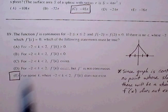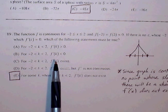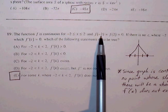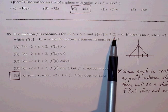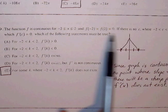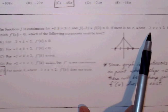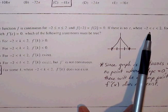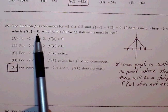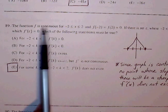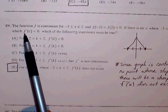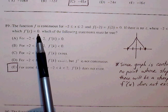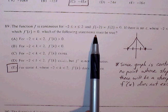Okay, 89. The function f is continuous between negative 2 and 2, and we have ordered pairs given to us. f of negative 2 is 0, f of 2 is equal to 0. If there is no C where C between negative 2 and 2 for which f'(C) is equal to 0, so the graph is continuous, we have these ordered pairs, but there's no point where the slope is equal to 0. Which of the following must be true?